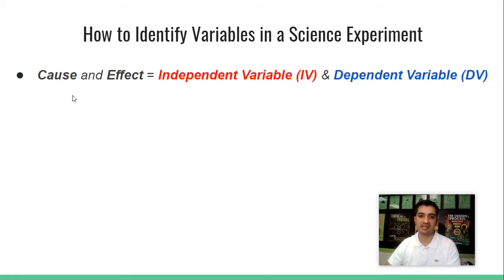First off, every good science experiment has a cause and effect. We just use different words for those in science. The cause represents the independent variable, and the dependent variable is the effect.